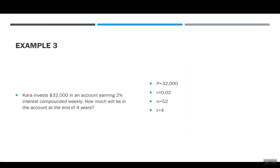Let's switch it up a little. This time Kara invests $32,000 in an account earning 2% interest compounding weekly. How much money will be in the account at the end of four years? Just like before, I'm going to start by saying my P is $32,000, my R is .02. This time weekly compounding means N is 52 and our time is 4.